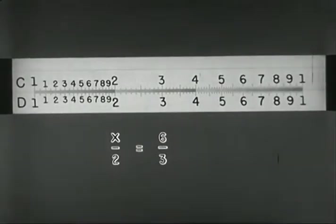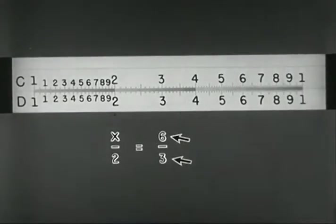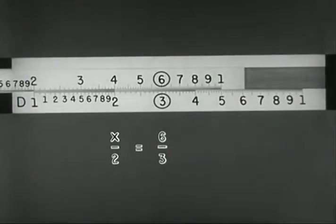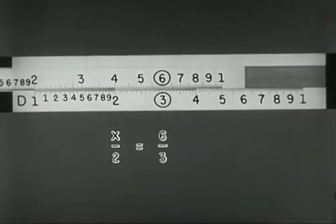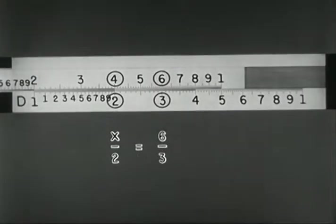With this problem, x is to 2 as 6 is to 3, the known quantities above and below the line are 6 over 3. So we find 3 on D, and to it slide 6 on C. Find 2 on D, and read x as 4 on C.